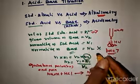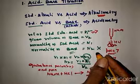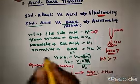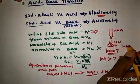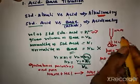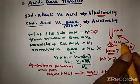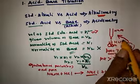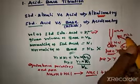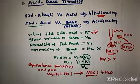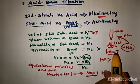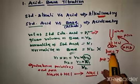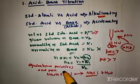This fact helps us select an indicator that changes color within the pH range occurring during the titration. For example, phenolphthalein: it gives a color in alkaline solution, so one or two extra drops of NaOH in the neutralized solution gives a pale pink color. The change in the color of the solution indicates the end point of the titration.